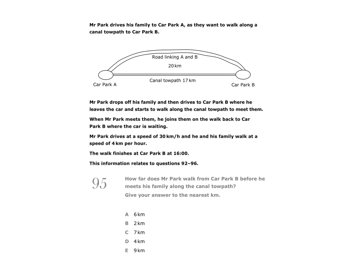When Mr Park meets them, he joins them on the walk back to car park B where the car is waiting. Mr Park drives at a speed of 30 kilometres per hour and he and his family walk at a speed of 4 kilometres per hour. The walk finishes at car park B at 1600 hours. This information relates to questions 92 to 96.